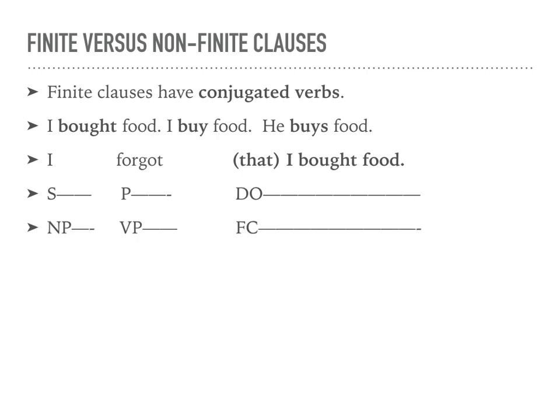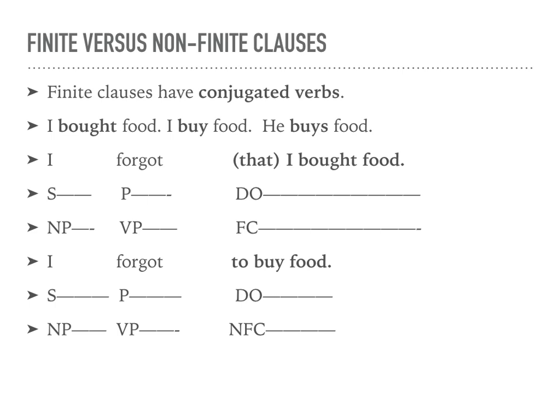If we look at 'to buy food' — for instance, 'I forgot to buy food' — we still have the same structure: a subject, a predicator, and a direct object. But now we have a noun phrase, a verb phrase, and a non-finite clause. When we talk about non-finite clauses, we have four different types.